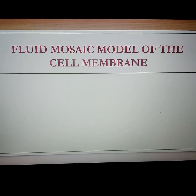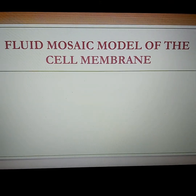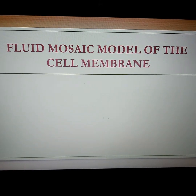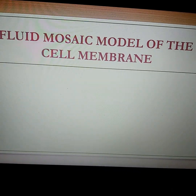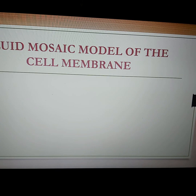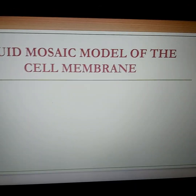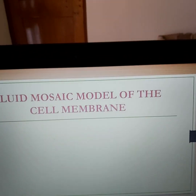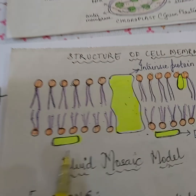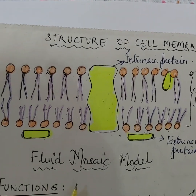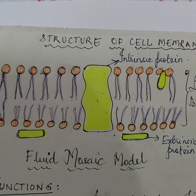Several scientists came up with different structures to explain the cell membrane, but the most widely accepted model is the fluid mosaic model, suggested by Singer and Nicholson. This model is not given in your NCERT, so I insist all of you have a closer look at the structure as I explain it. This is the fluid mosaic model given by Singer and Nicholson to explain the structure of the cell membrane.